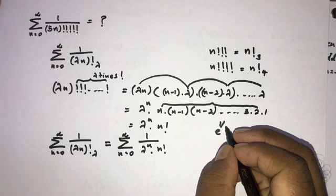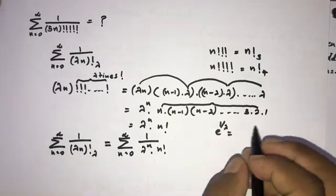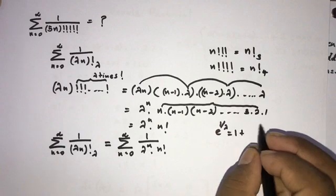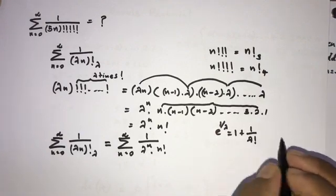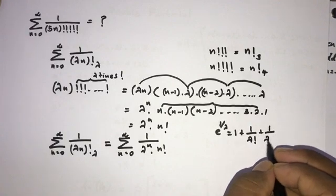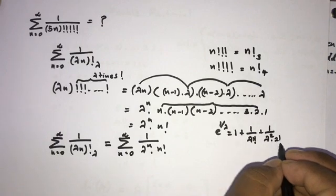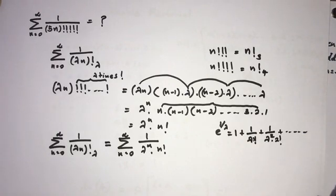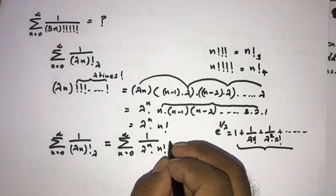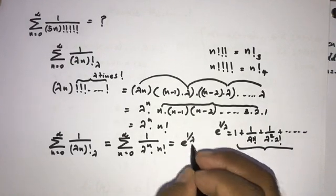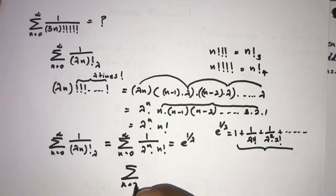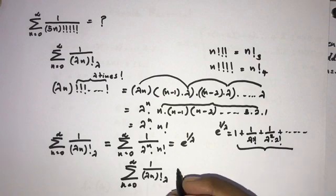We know that e to the power x equals 1 plus x over 1 factorial plus x squared over 2 factorial and so on. Here with x equal to 1 over lambda, the sum matches exactly. So our sum equals e to the 1 over lambda.